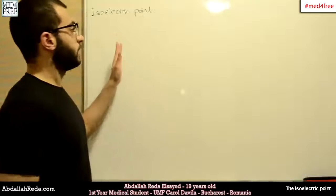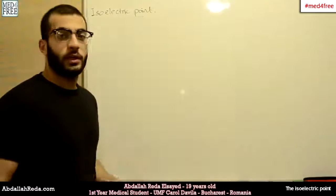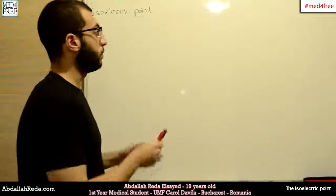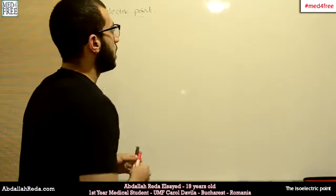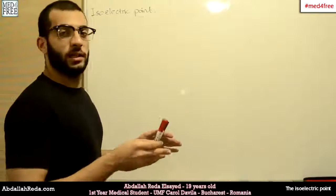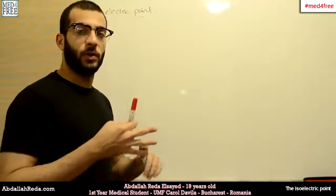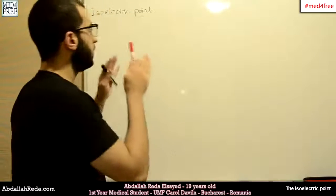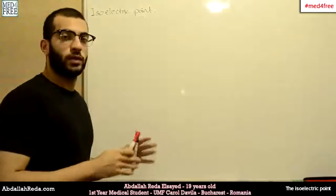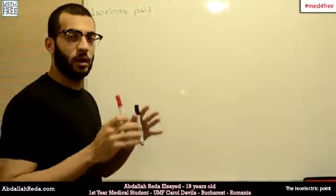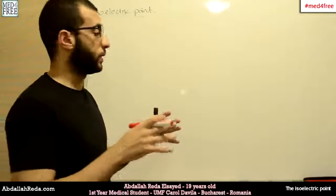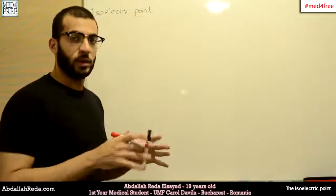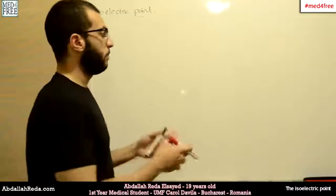Today we're going to talk about the isoelectric point. The isoelectric point is a property of amino acids that determines the type of ionization that happens to the carboxylic group and the amino group. It means that this is the point where the amino acid is considered electrically neutral compared to the surrounding medium.